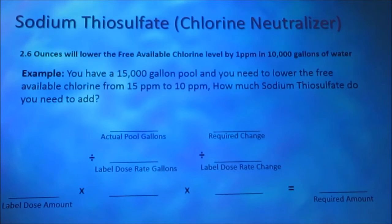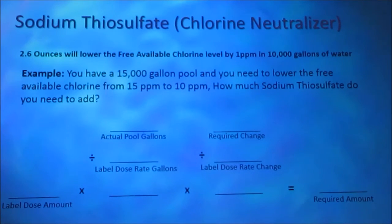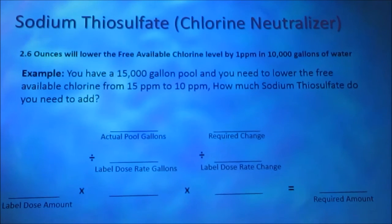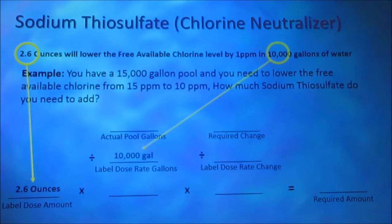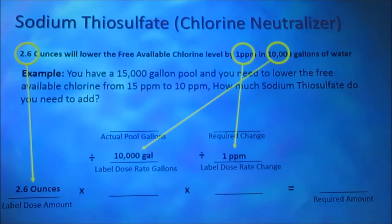You have a 15,000 gallon pool and you need to lower the free available chlorine level from 15 parts per million to 10 parts per million. How much sodium thiosulfate do you need to add? The label instructions read: 2.6 ounces will lower the free available chlorine level by 1 part per million in 10,000 gallons of water. 2.6 ounces is our label dose amount, 10,000 gallons is our label dose rate gallons, and 1 part per million is our label dose rate change.